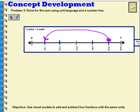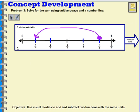So earlier in this lesson, we used a number line that showed 6 sixths on it. And it showed that we had 5 sixths, and we subtracted 4 sixths, and we got 1 sixth.